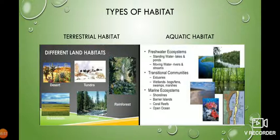There is also an aquatic habitat which is in between. For example, the places where the river meets the ocean — we call these places estuaries. These are also a distinct type of aquatic habitat. Now let us discuss each of these habitats in detail.